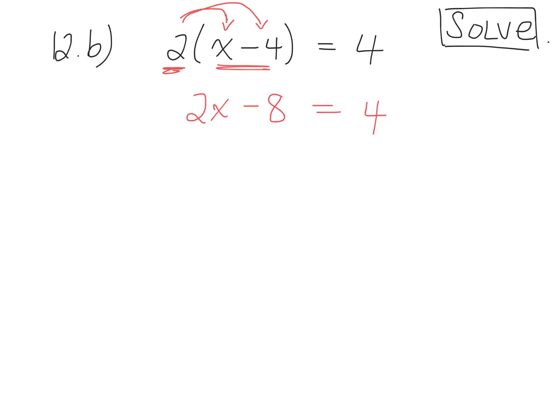Okay, so right now we have on the left side of the equation, 2x minus 8. Can I take 8 away from 2x? I need to get rid of the negative 8. What's the opposite of take away 8? Add 8. So what do I need to do to the right side? Good. So I have 2x equals 4 plus 8. 2x equals 12.